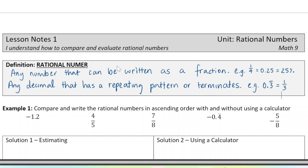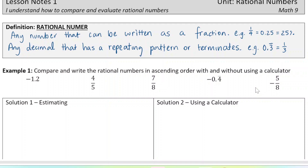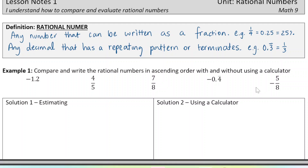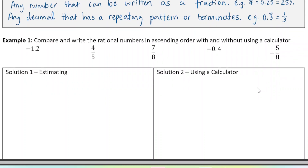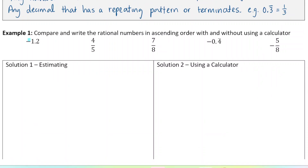Okay, Example 1. We are going to compare some rational numbers and they're written in different formats — we have some decimals and some fractions. We're first going to do this just by estimating and thinking and reasoning, and then we're going to use a calculator to check our answers. I notice that some of these numbers are negative and some are positive, so let's compare the positive numbers first.